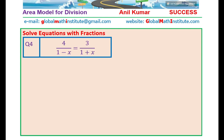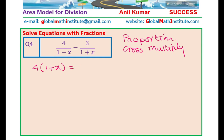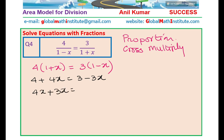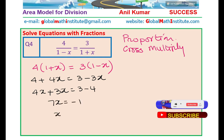Question 4 is a proportion-type equation, so we cross multiply. This gives us 4 times (1 plus x) equals 3 times (1 minus x). Opening the brackets: 4 plus 4x equals 3 minus 3x. Bringing x's together: 4x plus 3x gives 7x, and the numbers give minus 1. So 7x equals minus 1, meaning x equals minus 1 over 7.